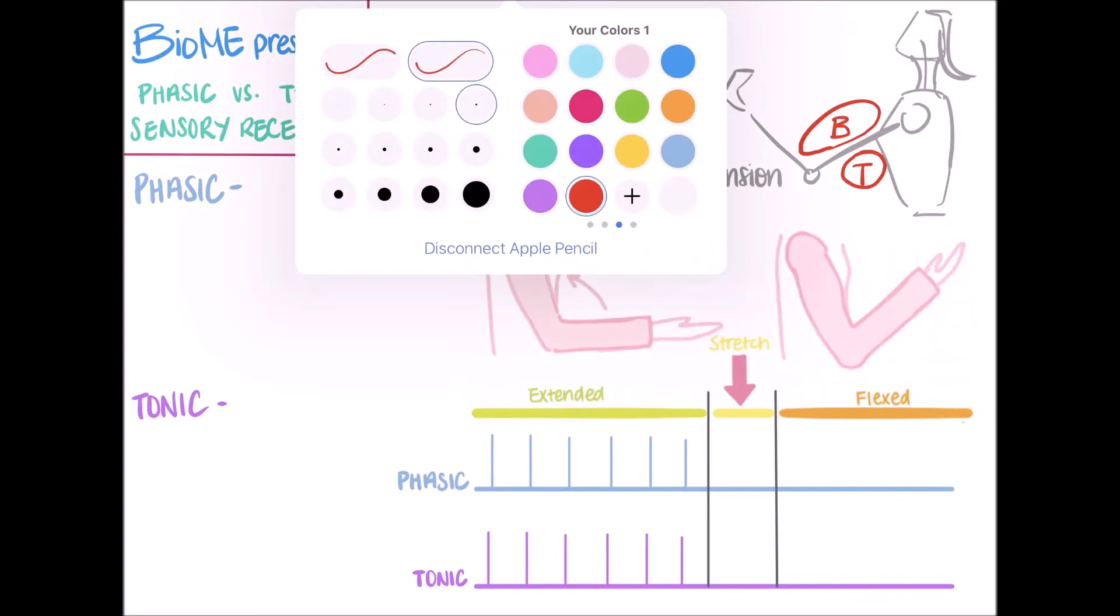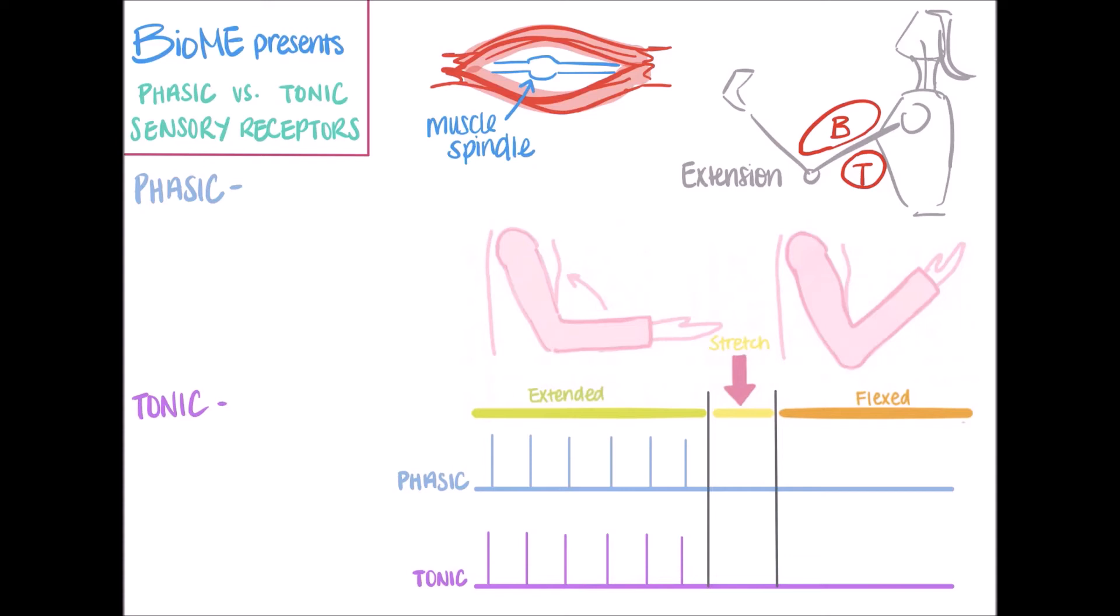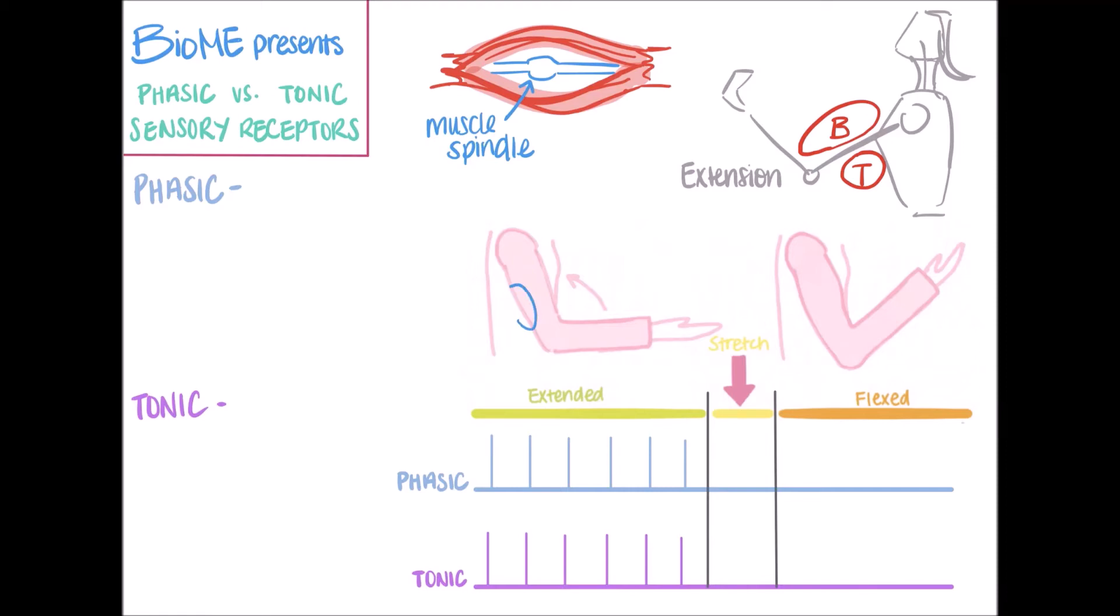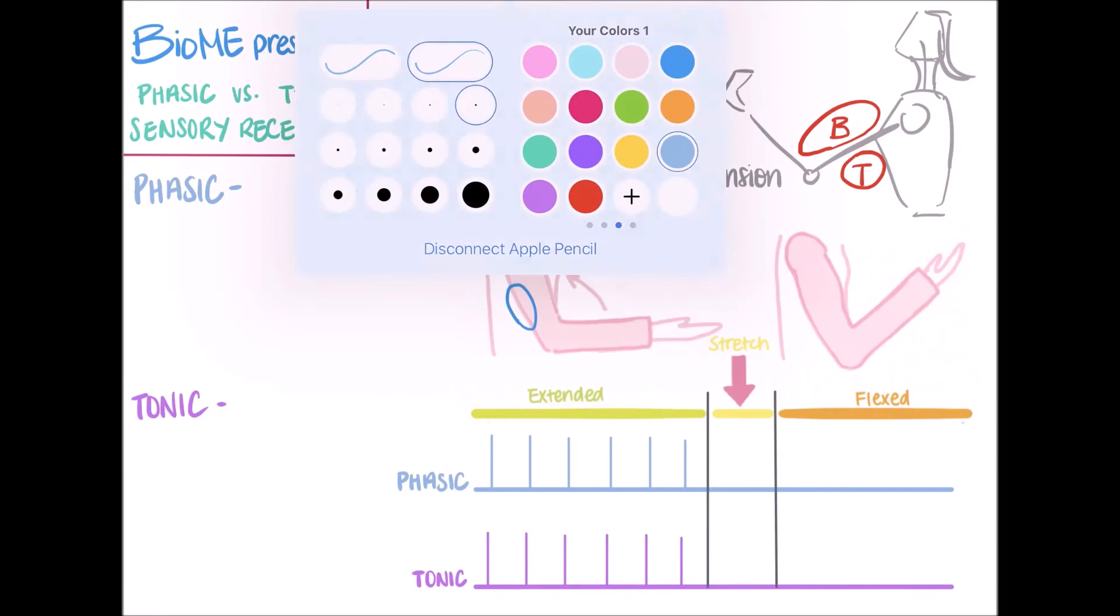Let's see how these two types of sensory receptors will respond in each section. Let's look at the sensory fibers in triceps. Here the muscle is contracted, so both types of sensory receptors are firing at their basal rate.